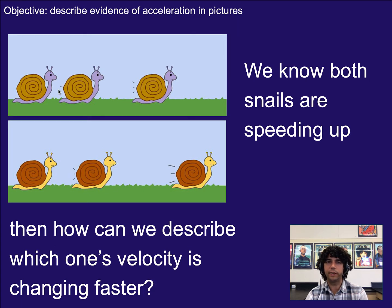We know looking at this picture that each of these snails is speeding up. We can tell that by the fact that the spacing between the snapshots is increasing for both snails. My question to you now is how can we describe which snail's velocity is changing faster? We kind of intuitively know it looking at this, but what words can we use to describe it?